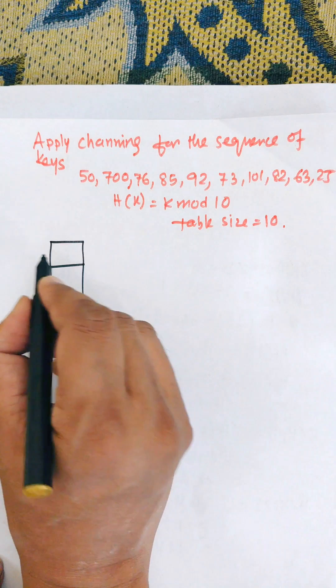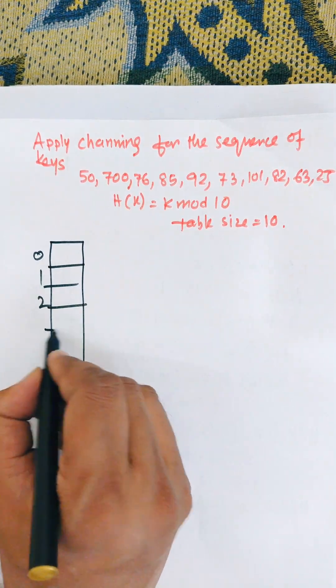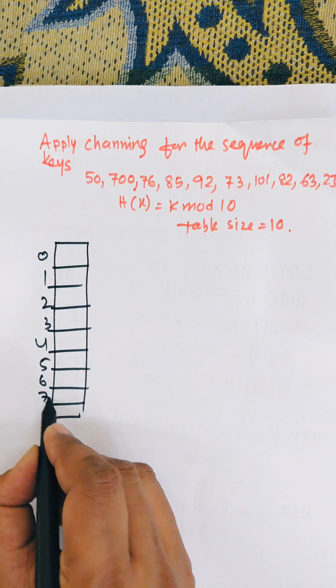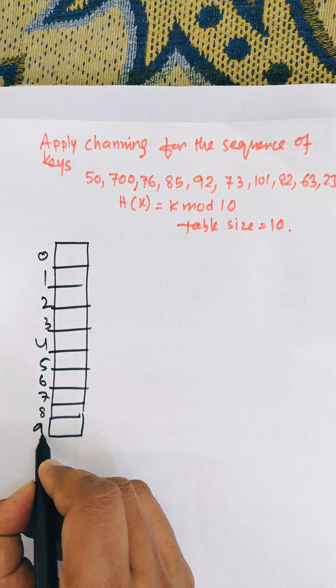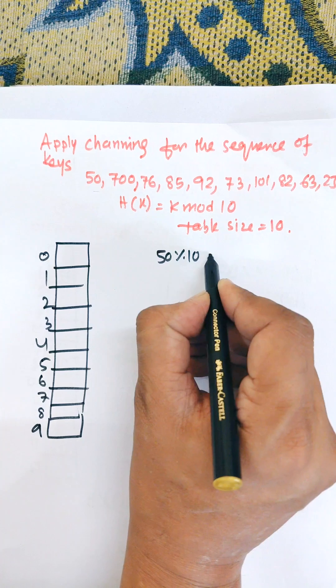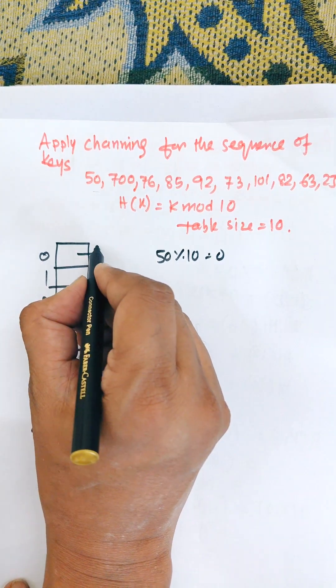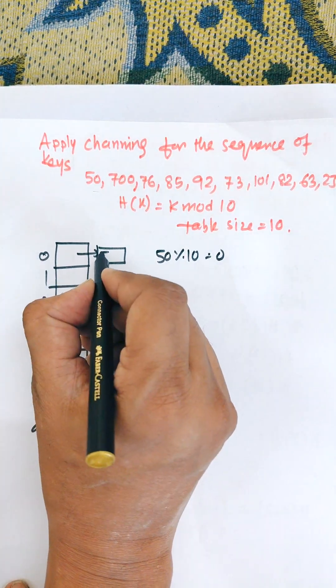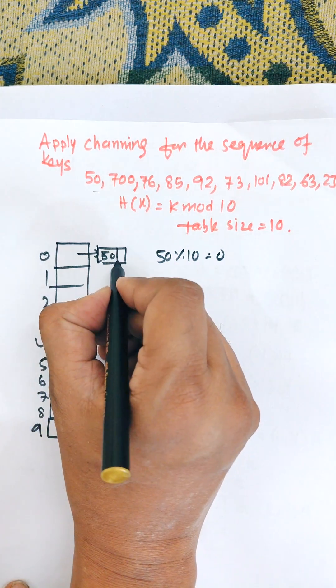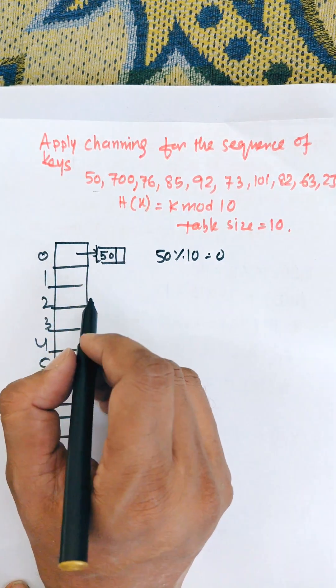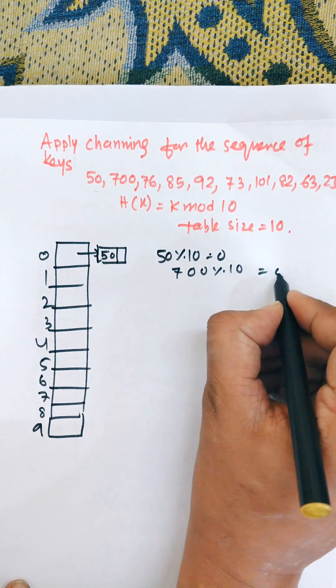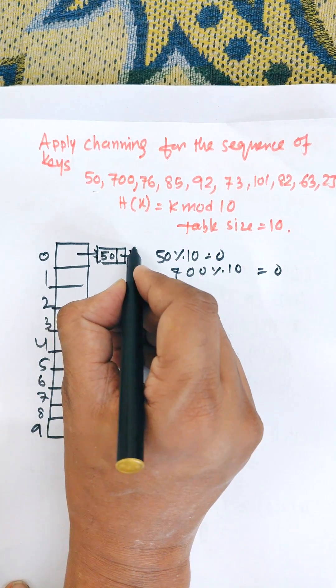Draw 0, 1, 2, 3, 4, 5, 6, 7, 8 up to 9. Now you need to divide 50 mod 10 equal to 0, so 50 will allocate in the 0. There is a pointer which points to the first node 50 from the 0 location. Then 700, 700 mod 10 equal to again 0, so it will add the next node after 50, which is 700.